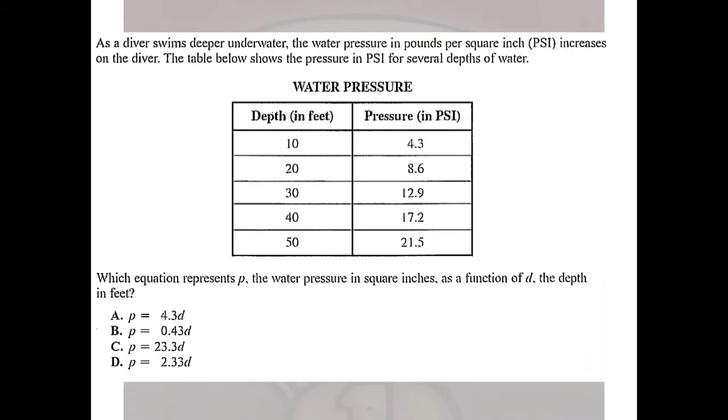All right, so in this first example, as a diver swims deeper underwater, the water pressure in pounds per square inch increases. The table shows the pressure for several depths of water. It says, which equation represents p, the water pressure in square inches, as a function of d, the depth in feet? So, given our choices, looks like what we really need to do is find slope, or how much this changes each time.